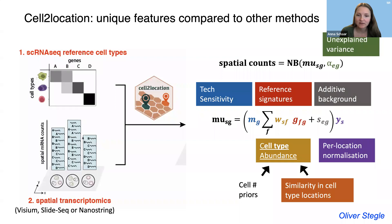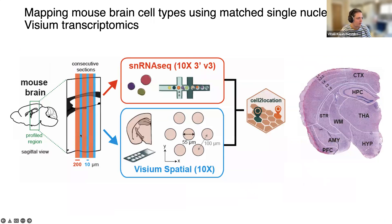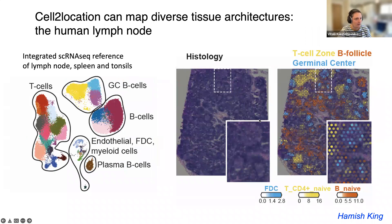The next question: does the reference data need to come from the same sample as the Visium data? It is indeed correct that you can use single-cell atlases that don't match the sample. In the mouse brain example, we used adjacent thin sections for Visium and thick sections for single-nucleus sequencing. We also applied cell2location in cases where the source of the lymph node spatial data is completely different from the atlas source, as long as the atlas contains cells expected to be in the spatial data.